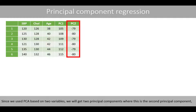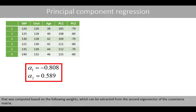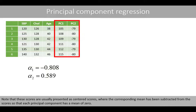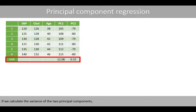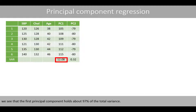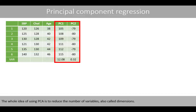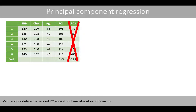Since we used PCA on two variables, we get two principal components. The second principal component is computed from weights extracted from the second eigenvector of the covariance matrix. These scores are usually presented as centered scores with mean subtracted so each principal component has a mean of zero. The first principal component holds about 97% of the total variance, so we delete the second principal component since it contains almost no information.